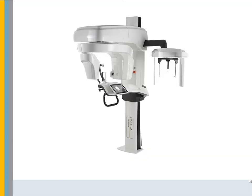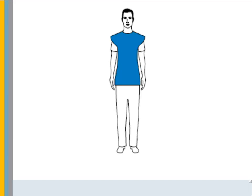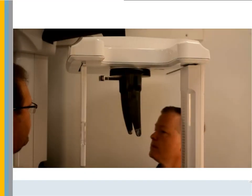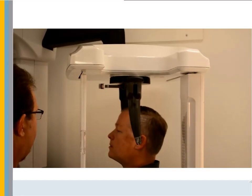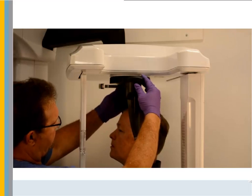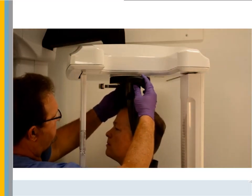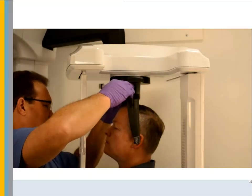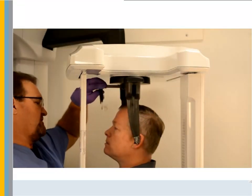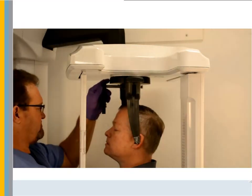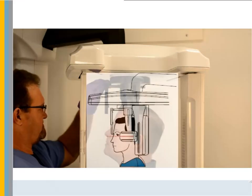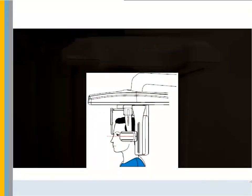Before taking X-ray images, make sure all metal objects are placed in the jewelry tray and a lead vest is placed on the patient. Make sure the head clamp bar is fully open and covered with an ear cone sheath. Do not pull from the bottom of the head clamp. After the unit is at the correct height, ask the patient to enter the unit and slowly close the head clamps. Then lower the Nasion bar, align it, and align the patient's head on the Frankfurt plane. Take the scan.